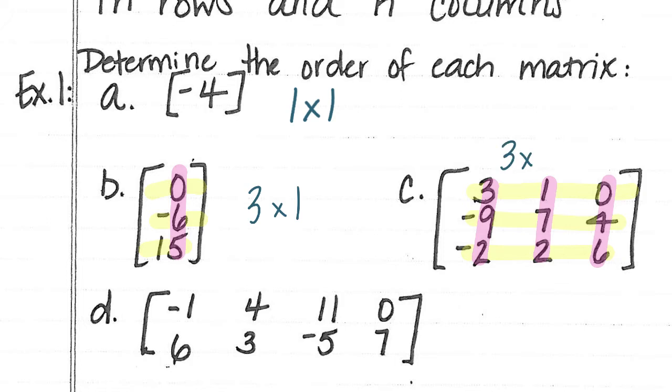And last, I have 2 rows by 4 columns, and this matrix will be a 2 by 4.